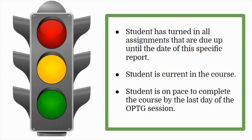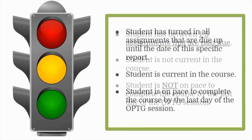The first option under the stoplight system is a green light. If you see a green light status, this means that all assignments due up until the date of this specific progress report email have been turned in on time. Essentially, your student is current in the course and is on pace to complete the course by the last day of the OPTG session.